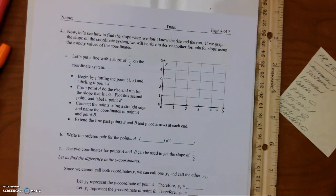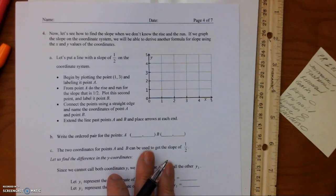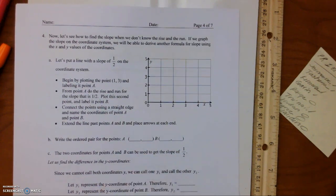Okay, so this is What is Slope Part 2. We're on question four on page four. Now let's see how to find the slope when we don't know the rise and the run. If we graph the slope on the coordinate system, we'll be able to derive another formula for slope using the x and y values of the coordinates.